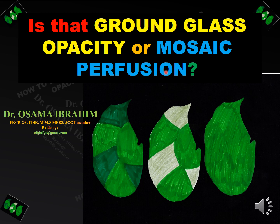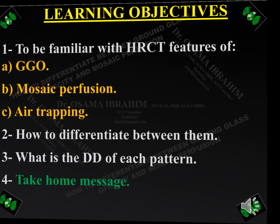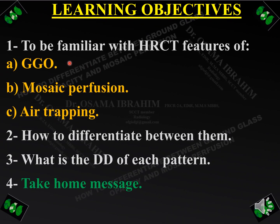Hello. I've heard a lot of confusion during the diagnosis of mosaic perfusion, so my presentation today aims to align everyone on that matter. The learning objective is to be familiar with HRCT features of ground glass opacity, mosaic perfusion, and air trapping, how to differentiate between them, the list of differential diagnoses for each one, and a take-home message.